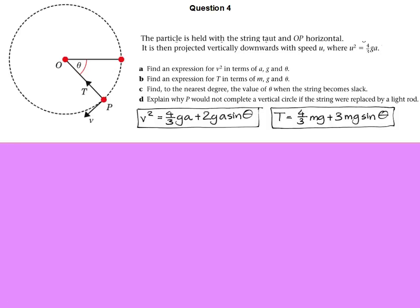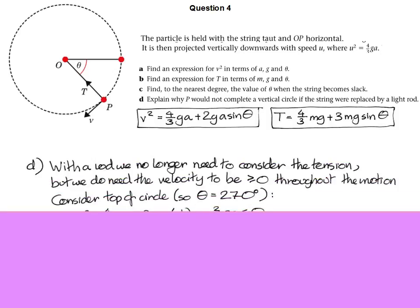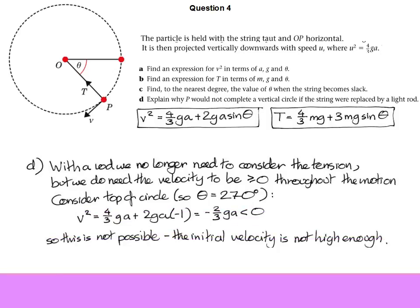Now, rods don't care about tension. You can quite happily compress a rod. What we do need to make sure now is that the velocity is always greater than zero. And the way I've chosen to do that is think about what the velocity would have to be at the top of the circle. The top of the circle has the angle being 270 degrees. So if I can substitute 270 degrees into my expression for velocity and solve it, everything's fine. But if you try it, you find that you would need to get a negative square for the velocity. And that can't happen. We're not in the world of complex numbers here. And that means the initial velocity is not high enough in order to go all the way around the circle.